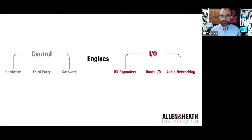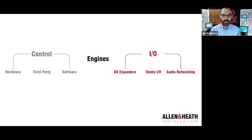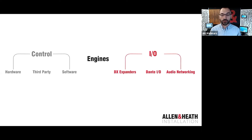Part of our success has been breaking down the components of an audio system and addressing each need separately. We have a range of processing engines — the DM and CDM range from the DLive family and the AHM-64 matrix processor. We also have IO expanders you can network around a venue, Dante expanders, and audio networking cards for interfacing with other protocols. We'll cover our 'everything IO' ecosystem in dedicated sessions during the conference.